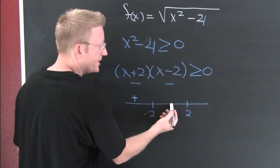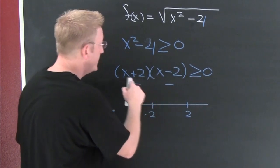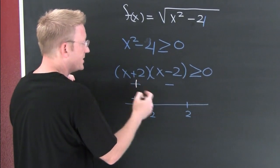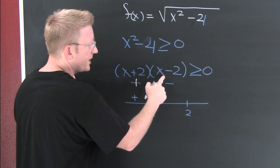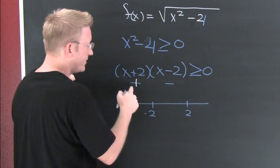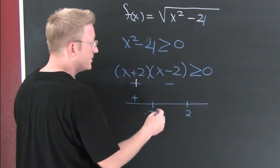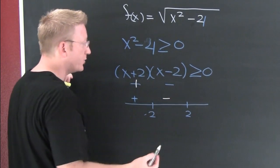Now let's check a spot in here. Zero is usually good. Zero makes this positive or negative? Positive. Zero makes this positive or negative? Negative. A negative times a positive is negative.